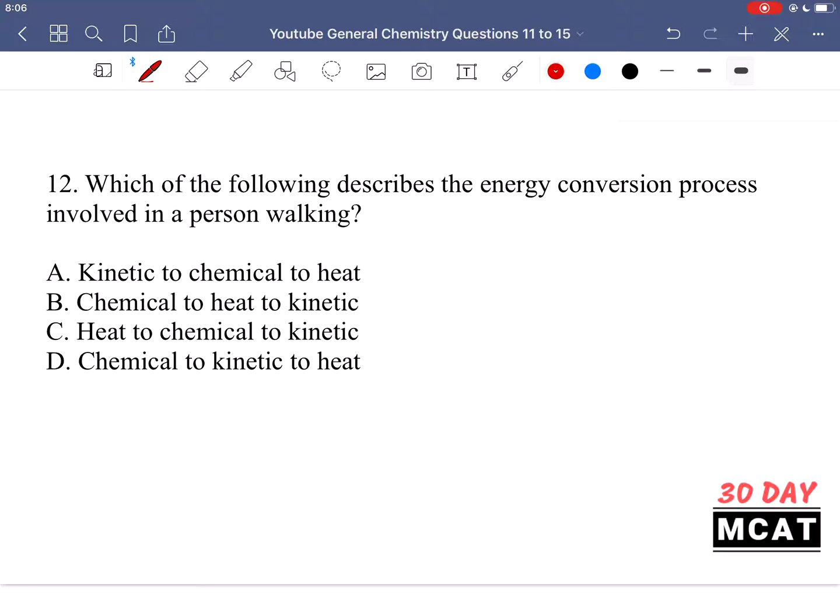In question 12, we're asked, which of the following describes the energy conversion process involved in a person walking? So we want to know energy conversion of a person walking. So for someone to walk, they need to move their muscles. For the muscles to have energy to move, that energy source comes from ATP. So ATP is the energy currency of the cell, and it's kind of a stored form of energy. Our cells have a certain amount of ATP stored up, which has the potential for the bonds in ATP to be broken and release energy. And then from that, the muscles can use that energy release to contract, and then we can get a person to walk.